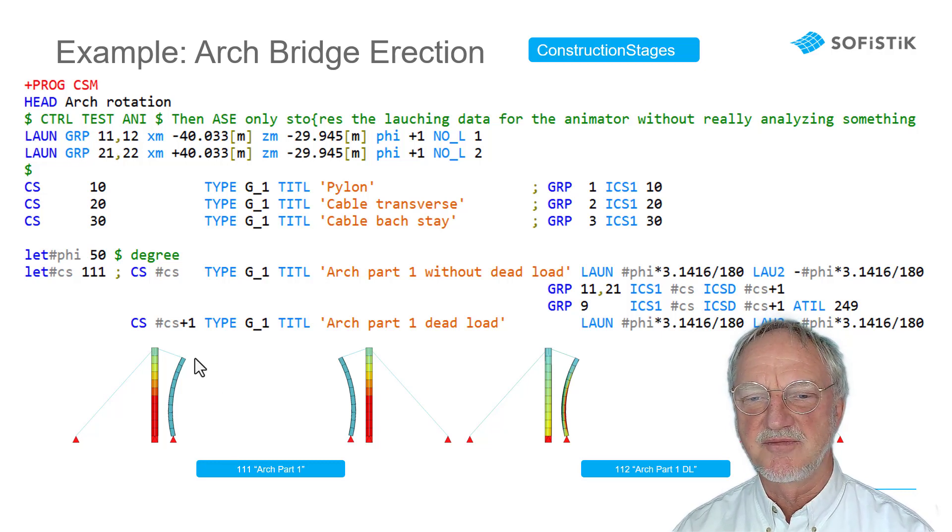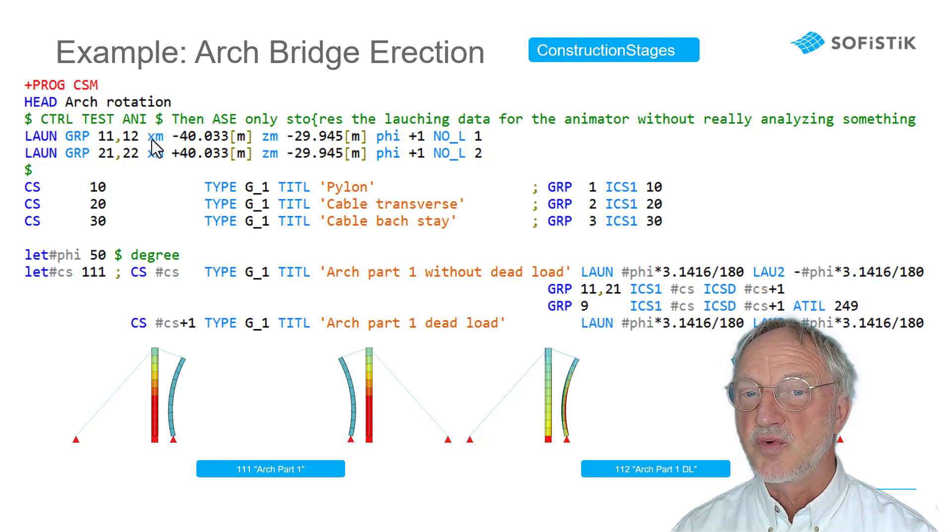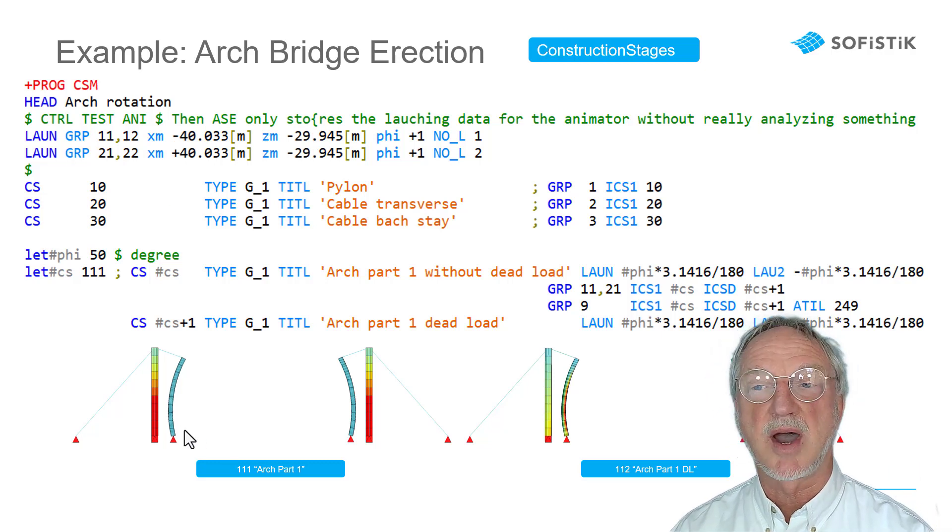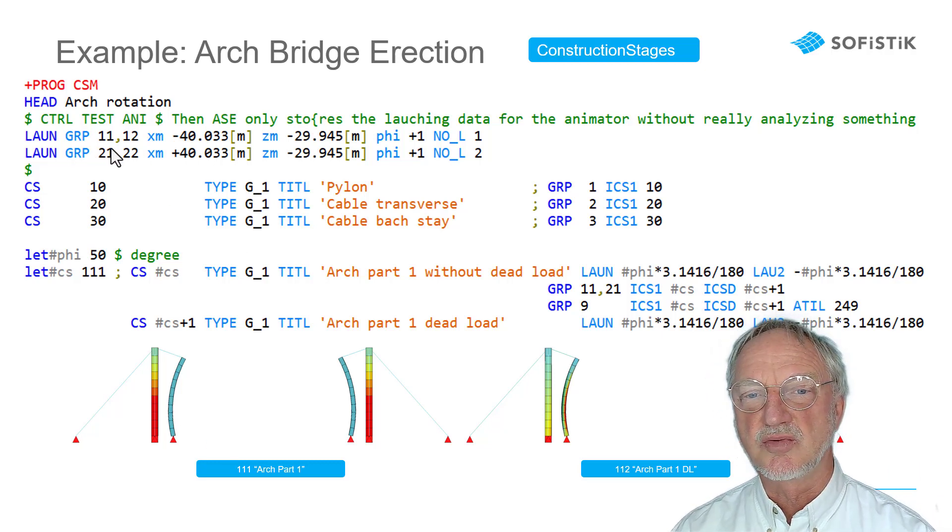Group 11 and 12 is this group. And we just have to input here the center of rotation. If we enter XM and ZM, then the rotation will be around the Y-axis. And group 21, 22 for the right arc part.